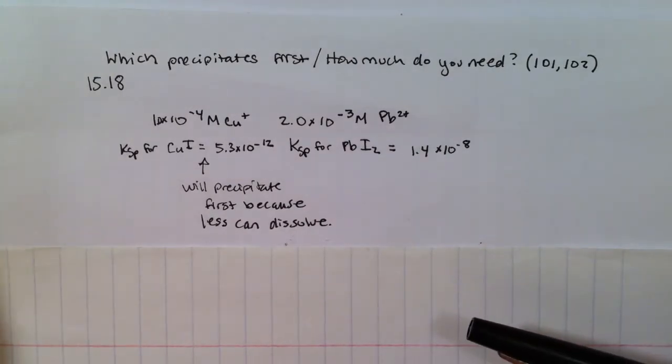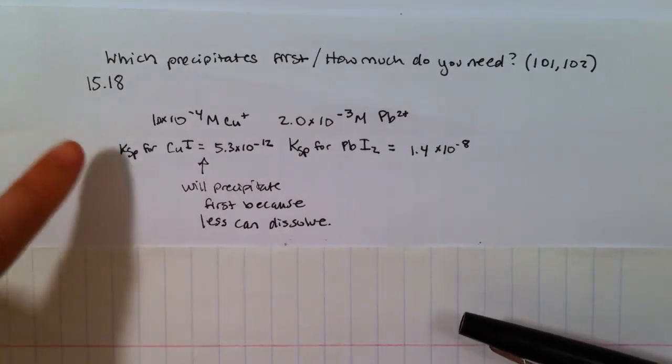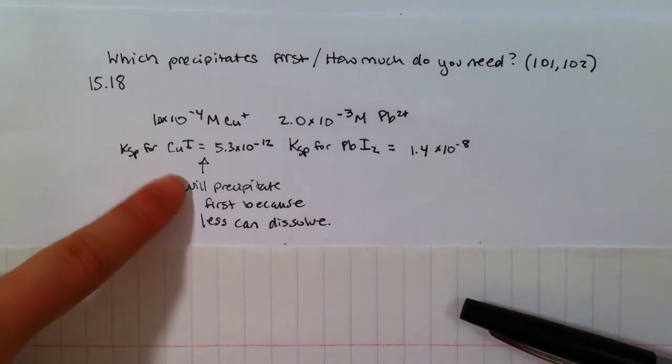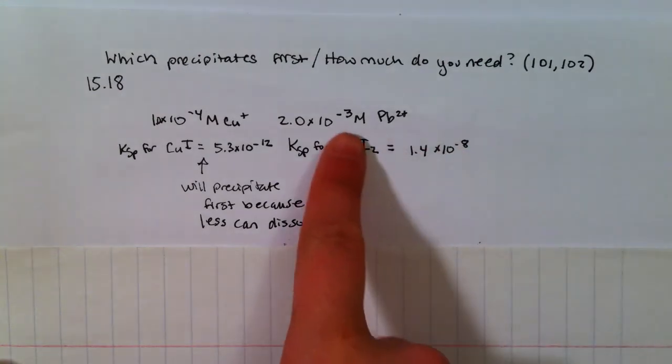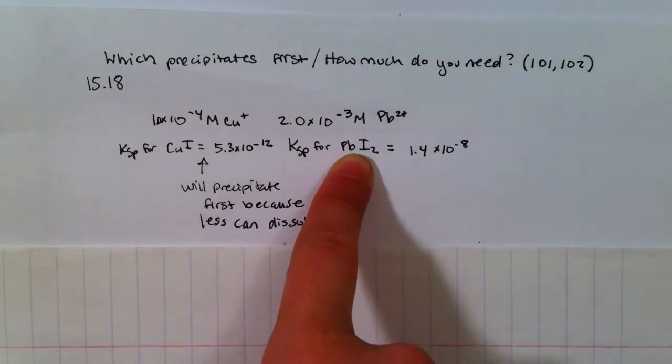Now, it asked me how much do I need. So I know the Ksp and I know the amount of Cu. All I need to do is solve for the amount of I-. I also know the amount of Pb and all I need to do is solve for the amount of I-.